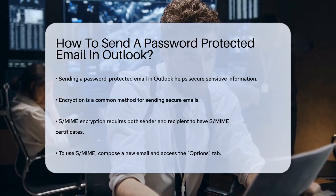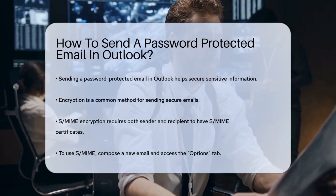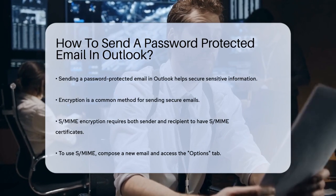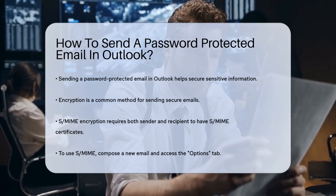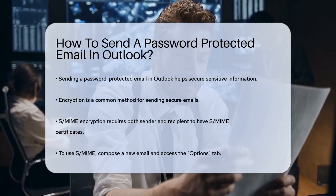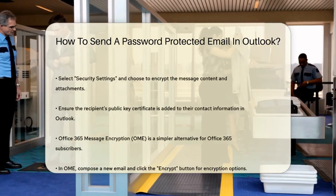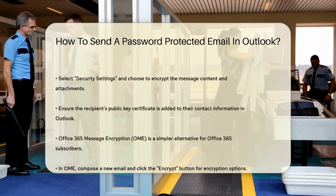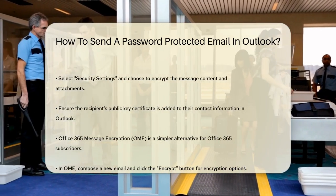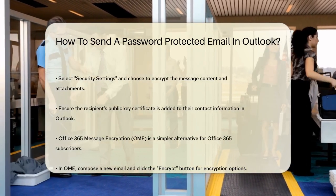Start by composing a new email in Outlook. Go to the Options tab, then click on the small icon beside More Options. Select Security Settings, and then choose Encrypt Message Content and Attachments.